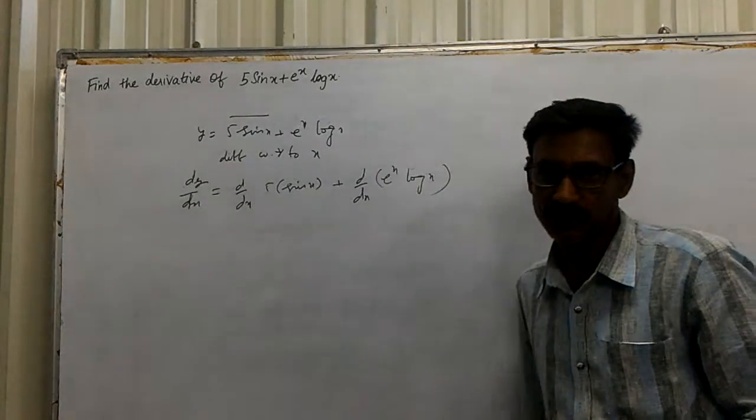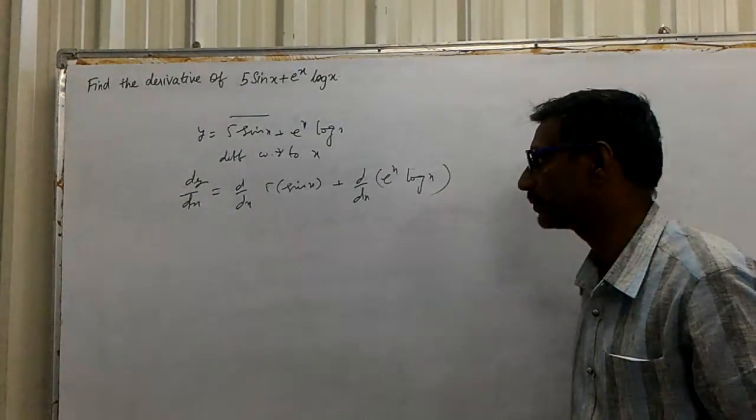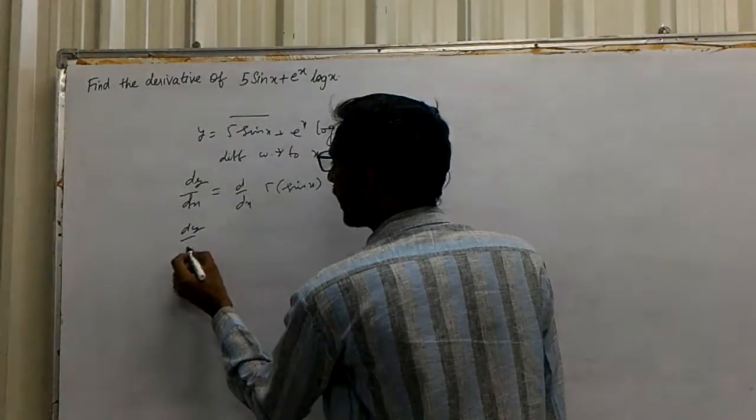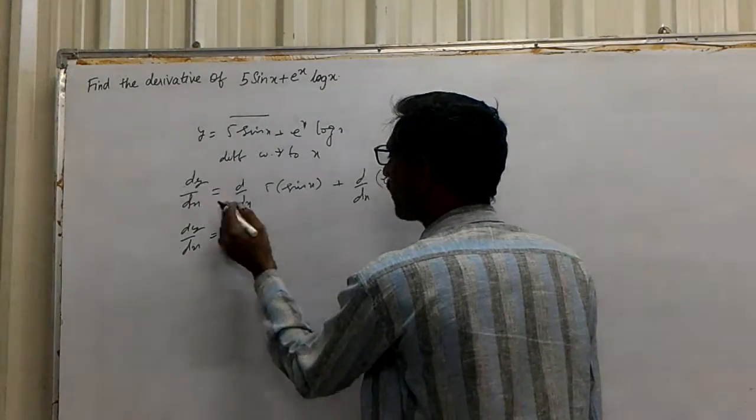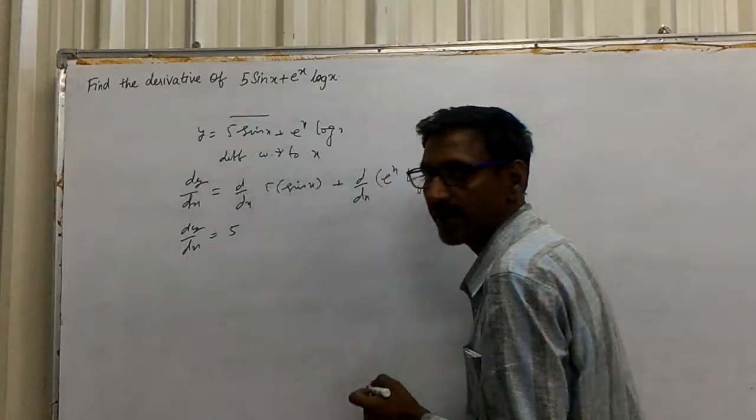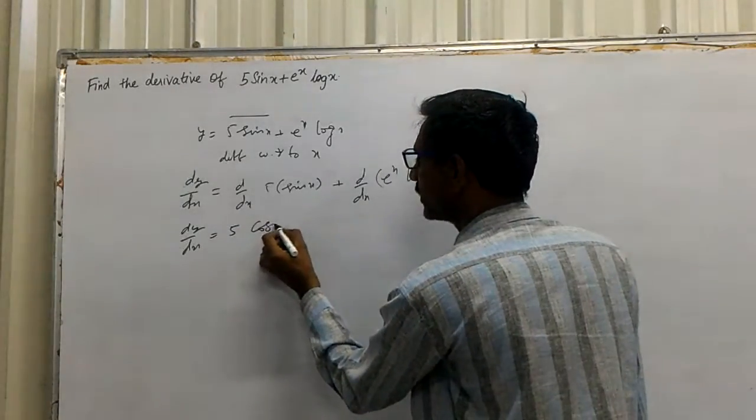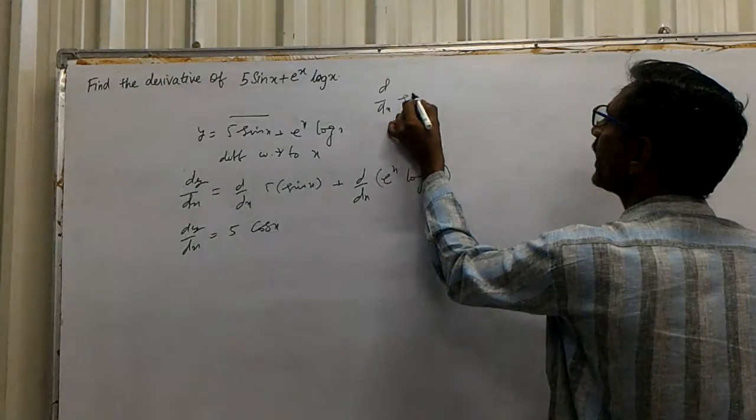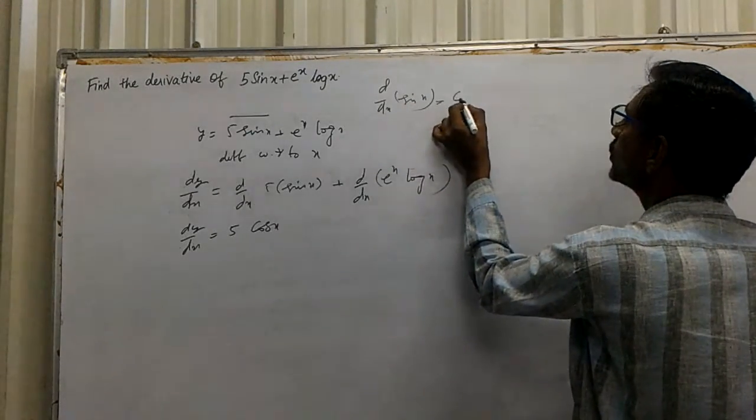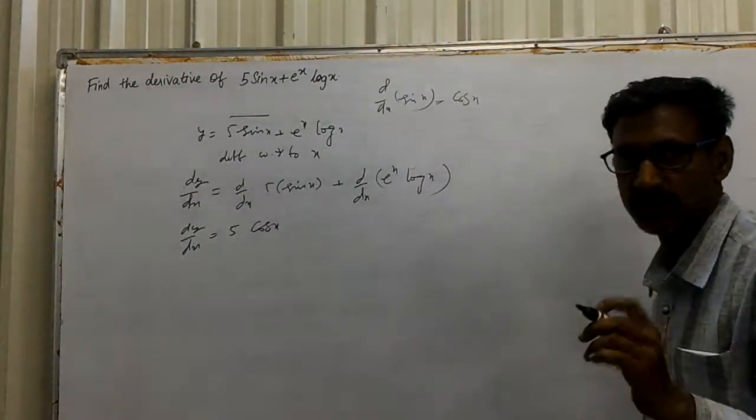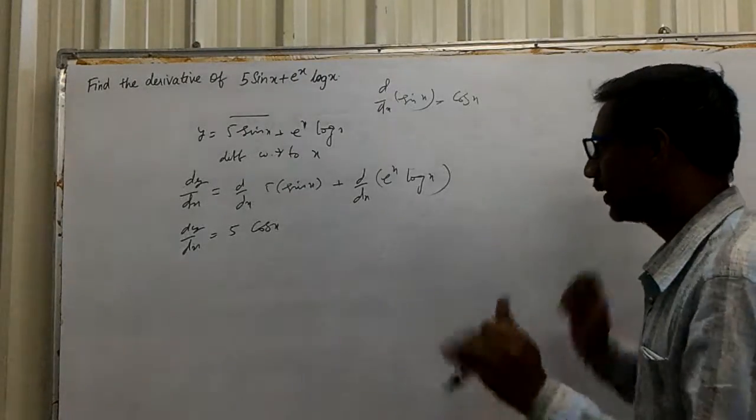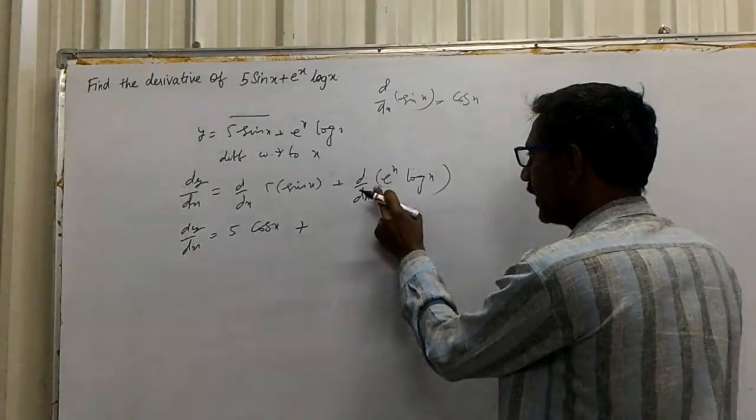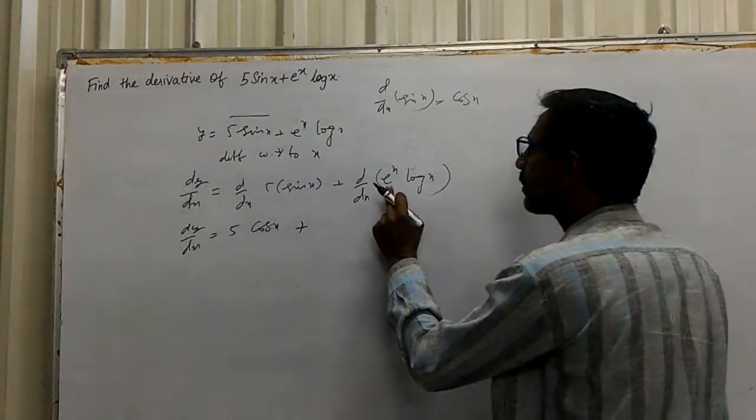This will be the UV method. dy by dx... The derivative of sin x is cos x. This is u: e to the power x.